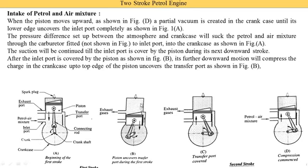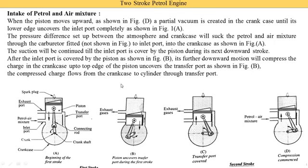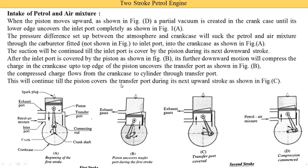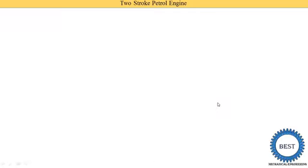The compressed charge flows from the crankcase to the cylinder through the transfer port. This continues until the piston covers the transfer port during its next upward stroke. In figure C, as the piston starts moving upward, it first closes the transfer port, stopping the supply of compressed charge.